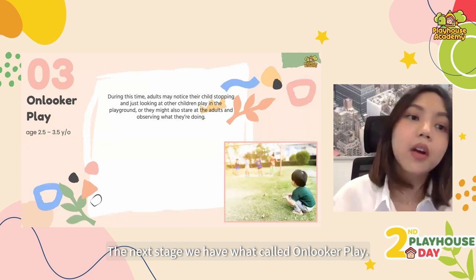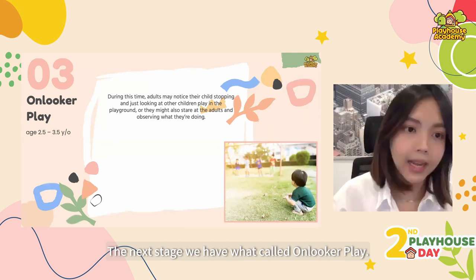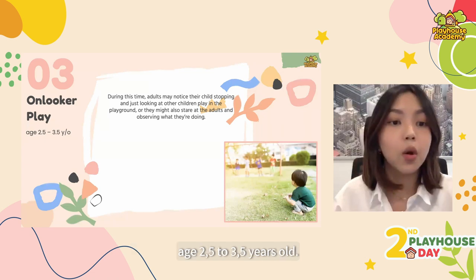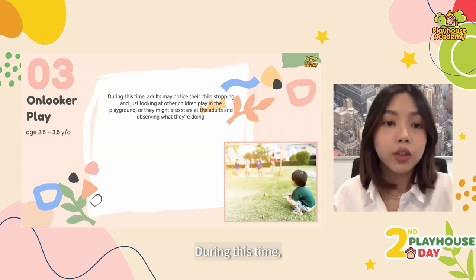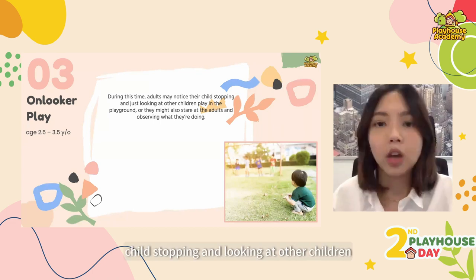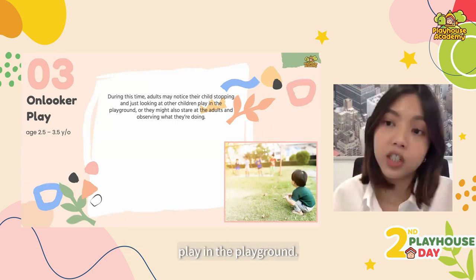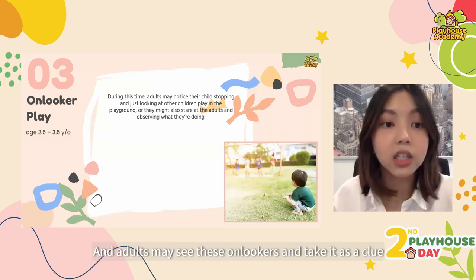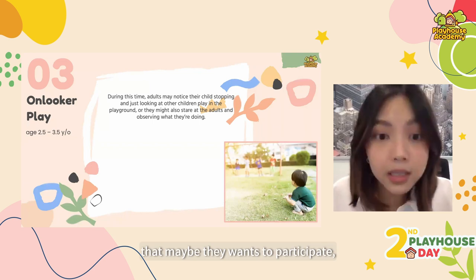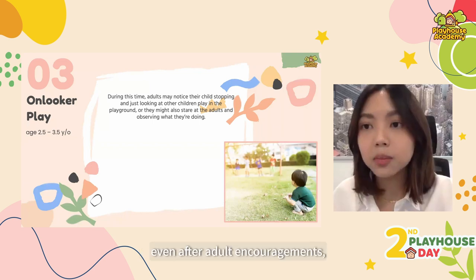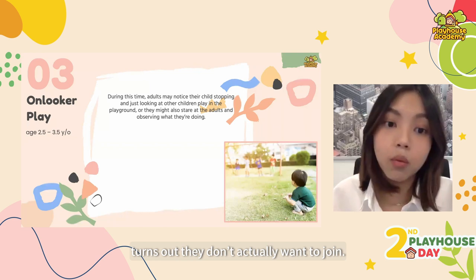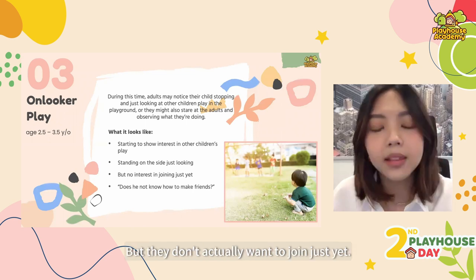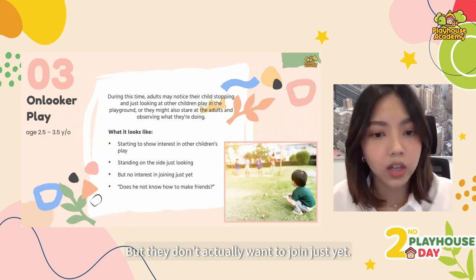The next stage is what's called onlooker play, and this can be seen happening with kids aged two and a half to three and a half years old. During this time, adults may notice that a child could be stopping and just looking at other children playing on the playground. Adults may see these onlookers and take it as a clue that maybe they want to participate, but even after adult encouragement, it turns out they don't actually want to join.